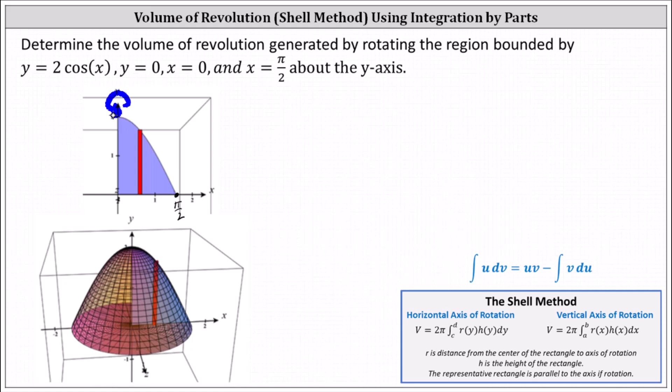Because we have rotation about the y-axis, it'll be easier to use the shell method. Whenever using the shell method, we sketch a representative rectangle that is parallel to the axis of rotation, which I've already shown here in red. Notice the thickness of the rectangle is a change of x or delta x. This indicates we integrate with respect to x, and therefore we'll be using the formula V equals 2 pi times the integral from a to b of r of x times h of x dx.